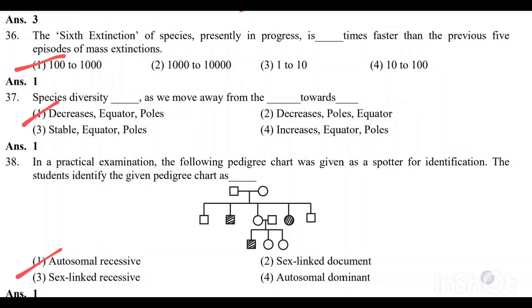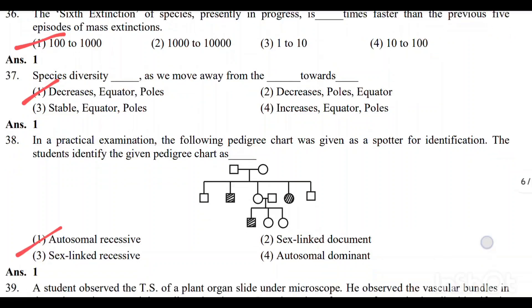Question number 37: The species diversity decreases as we move away from the equator towards the poles. Option 1 is the correct answer.